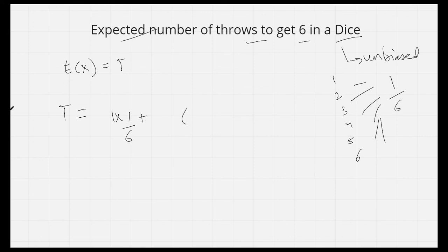Now if we don't get 6, what is the probability of that? There are 5 numbers with each probability 1 by 6. It's 5 by 6.